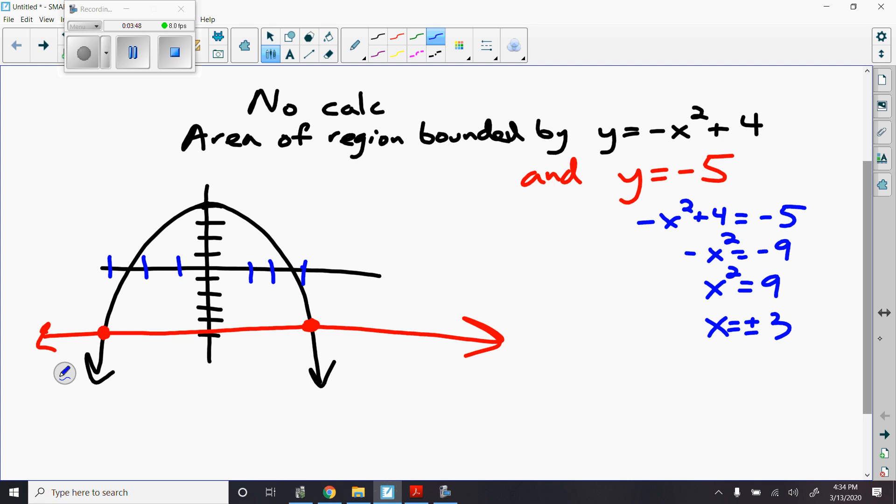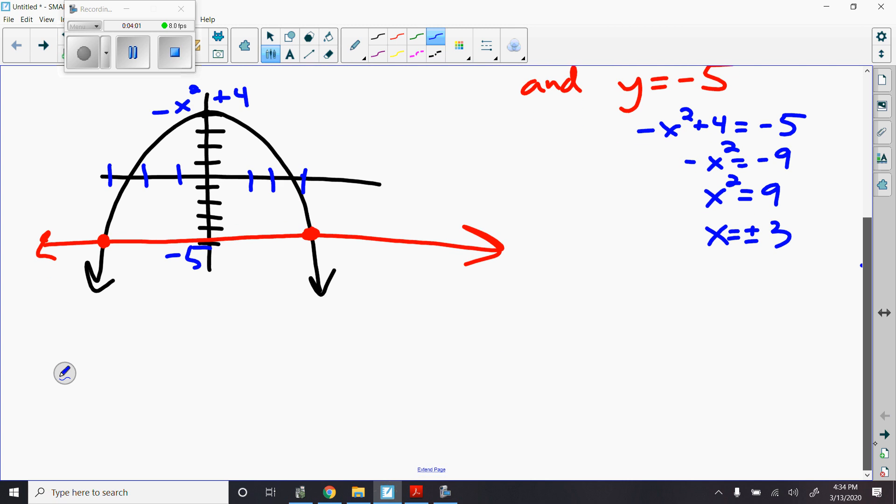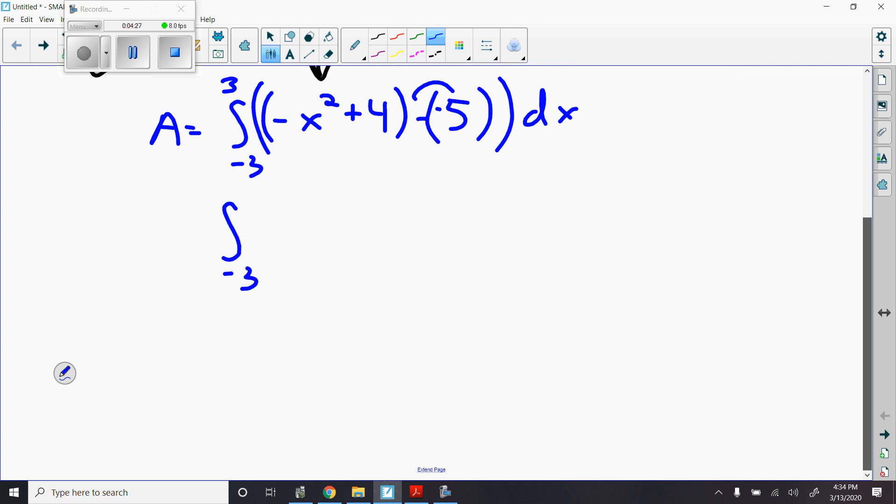Doing it the old way, I would do... I have to see that this top function is negative x squared plus 4, and this bottom function is the function negative 5. My area would equal the integral from negative 3 to 3 of the top function, negative x squared plus 4, minus the bottom function, negative 5, dx. Distributing that negative, I'm going to have the integral from negative 3 to 3 of negative x squared plus 4 plus 5, dx. Simplifying, I'm going to get the integral from negative 3 to 3 of negative x squared plus 9, dx.